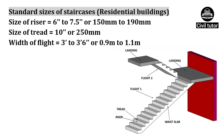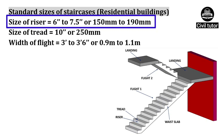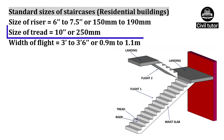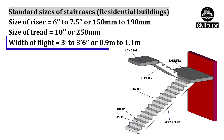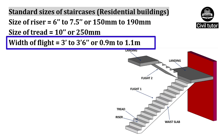Now let's discuss the standard sizes of staircases in case of residential buildings. The size of risers should be taken from 6 inches to 7.5 inches or 150 mm to 190 mm. The size of tread should be taken as 10 inches or 250 mm. The width of flight is taken from 3 feet to 3.6 feet or 0.9 meter to 1.1 meter.